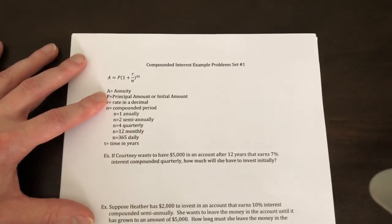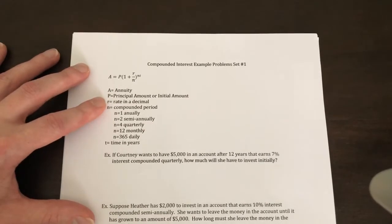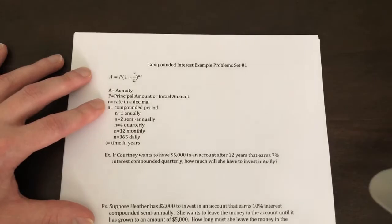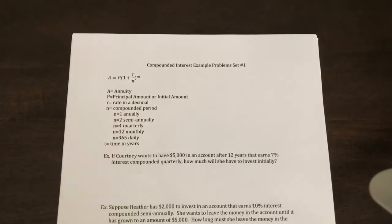R is your rate in decimal. N is the compounding period. So if N equals 1, it's annually; N equals 2 is semi-annually; N equals 4 is quarterly; N equals 12 is monthly; and N equals 365 is daily.